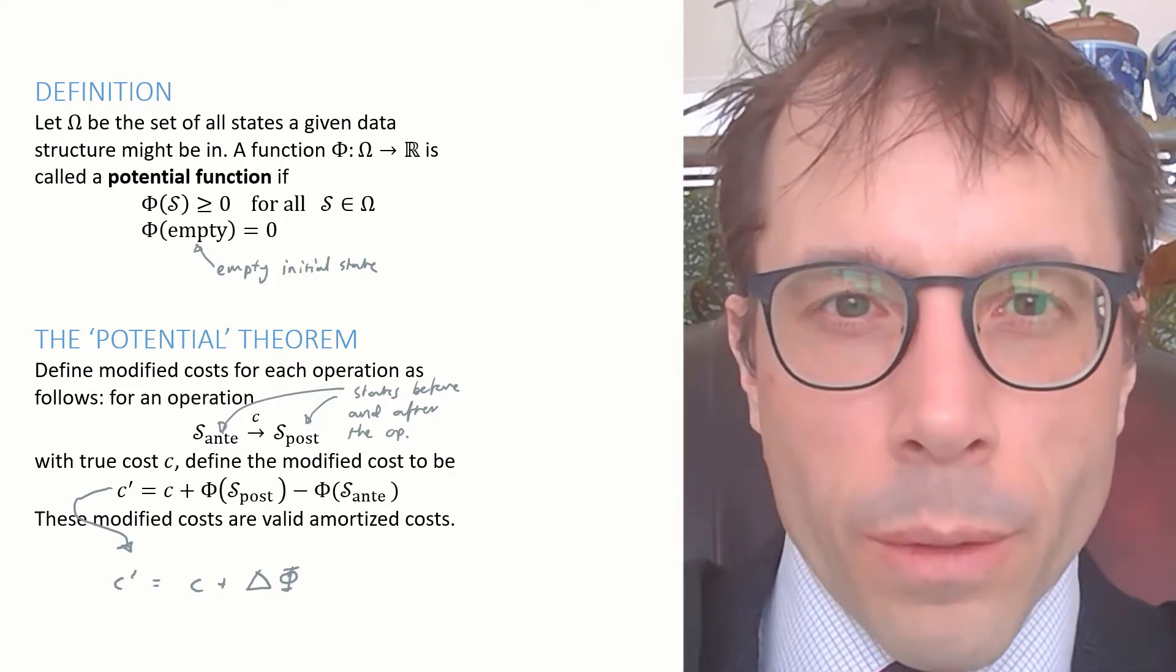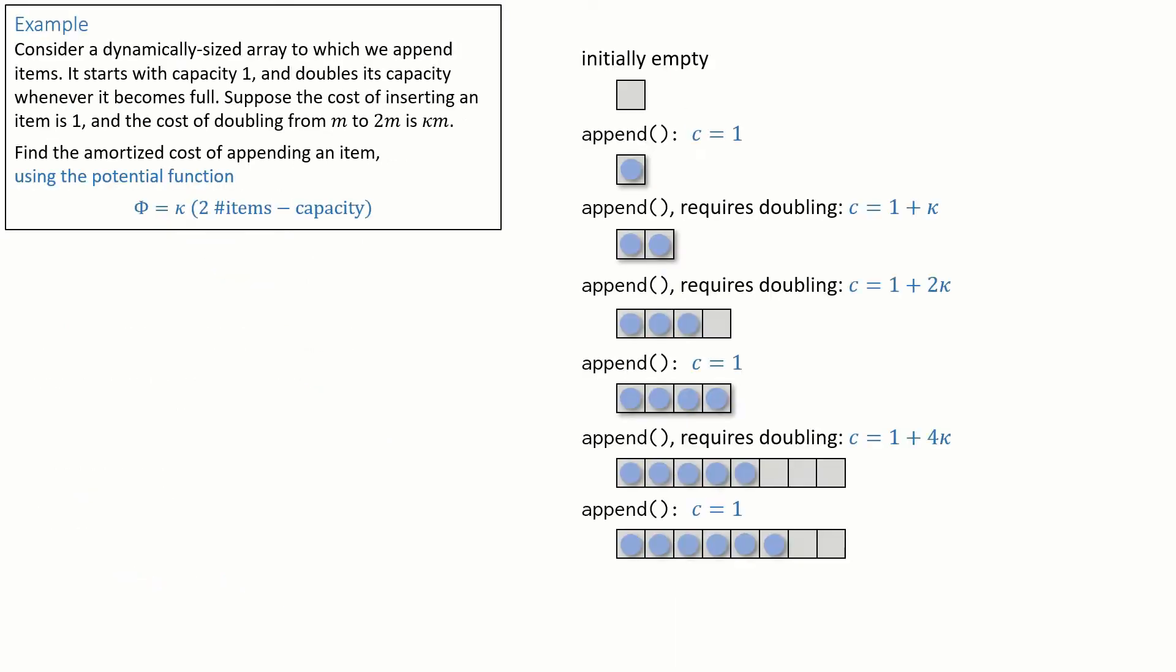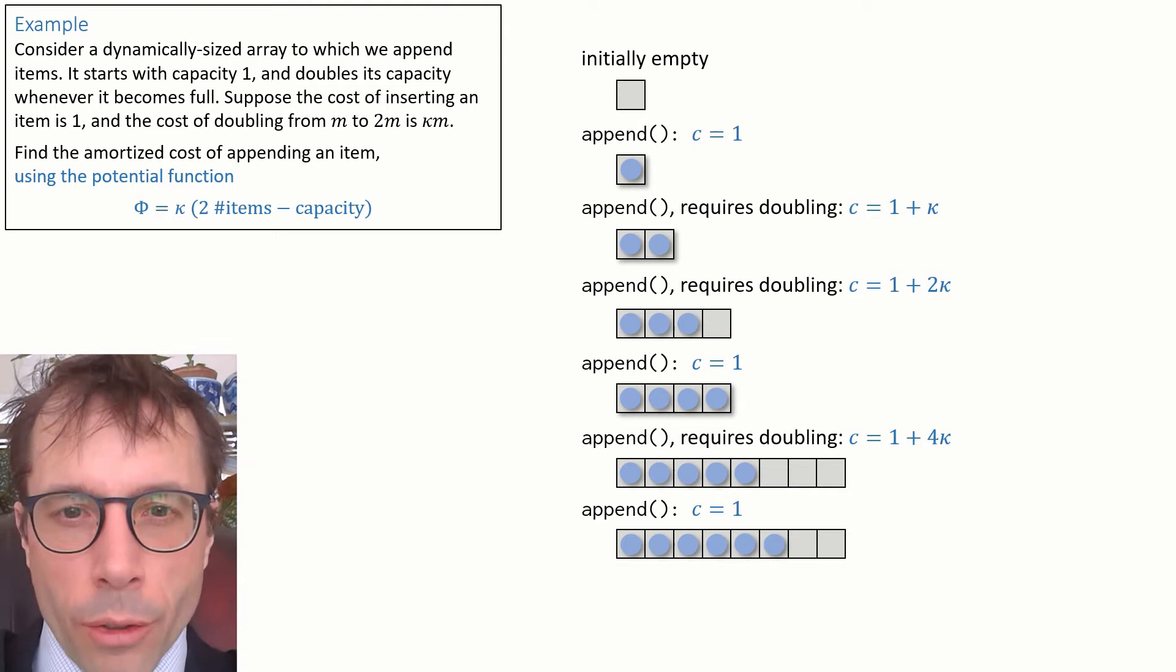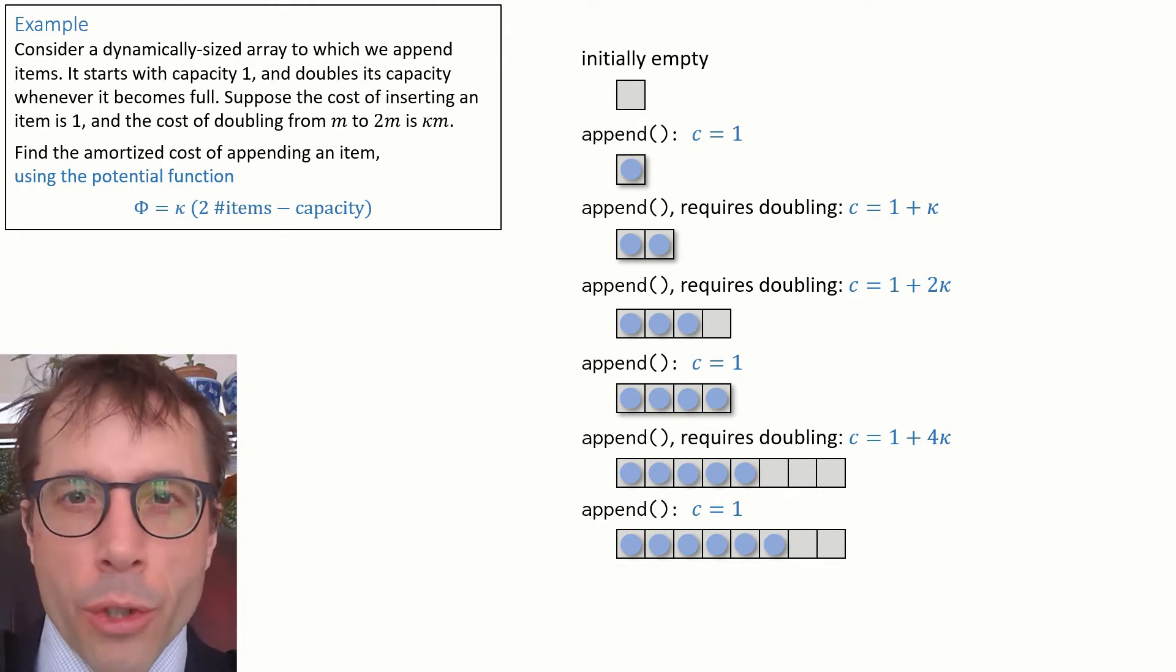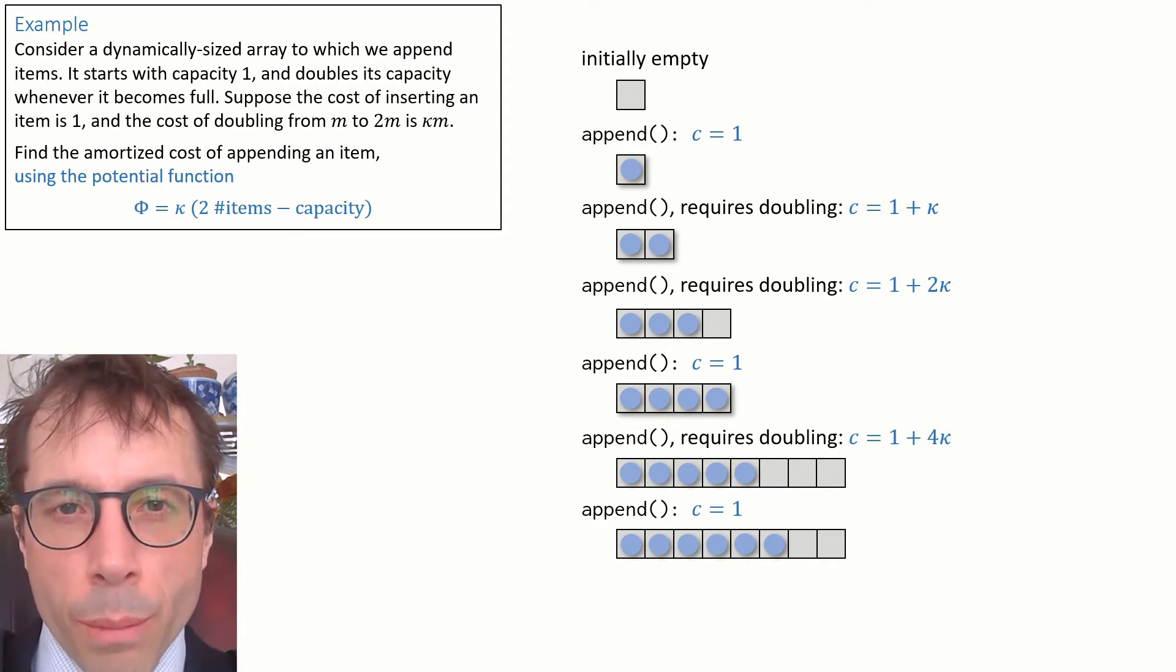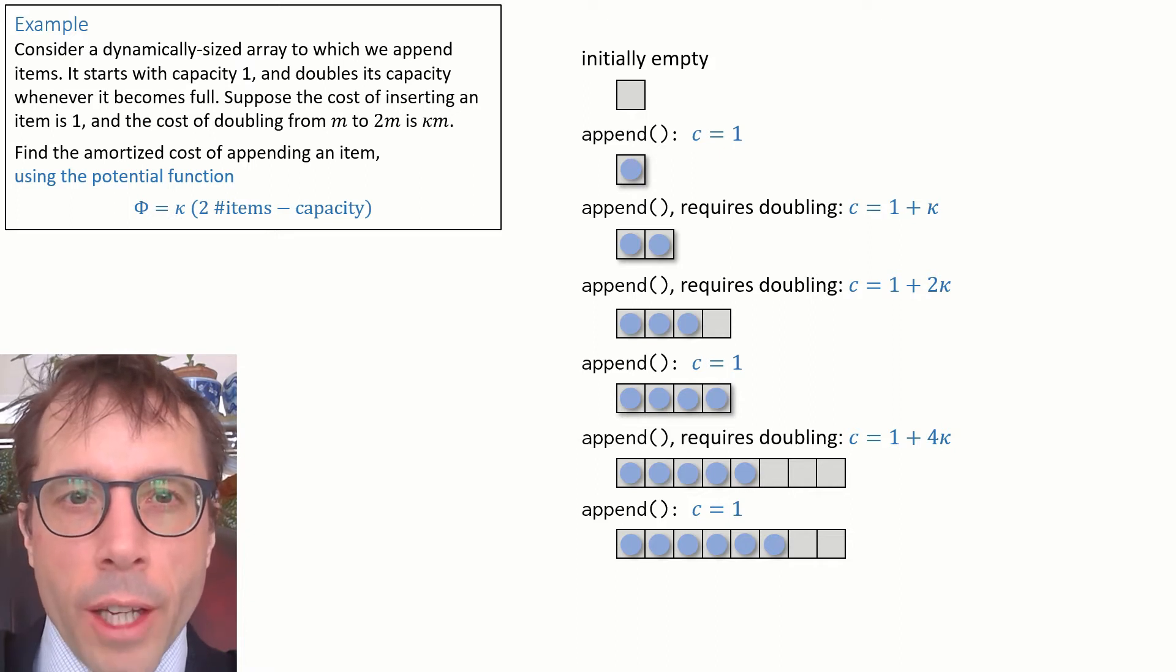Let's work through an example. This is the dynamically sized array that we looked at in the last video. In that video, we calculated the amortized cost of appending an item, and we did it direct from the definition of amortized cost. Now, let's do the same thing, but this time we're going to use a potential function instead. Let's use this potential function here, phi equals kappa times twice the number of items stored in the array minus capacity. Let's see how this plays out.